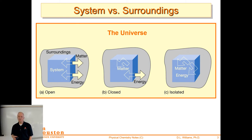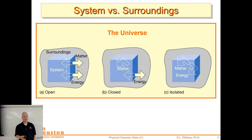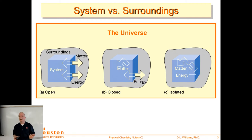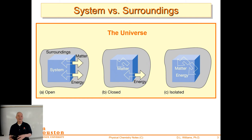An open system is one where matter can leave and energy can leave — our beakers in the lab are open systems. A closed system is one where matter can't exit but energy can go in and out. When you heat a closed system, energy is going in but matter can't leave, so you build up pressure — and that's a dangerous situation in glassware.